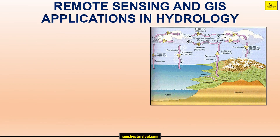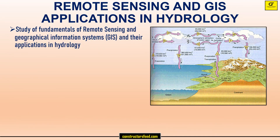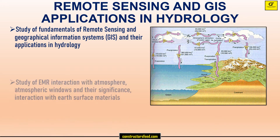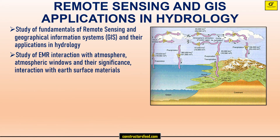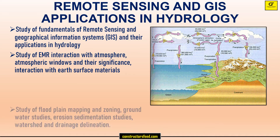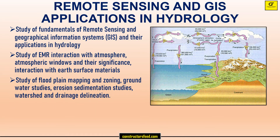Remote sensing and GIS applications in hydrology: study of fundamentals of remote sensing and geographical information systems and their applications in hydrology. Study of EMR interaction with atmosphere, atmospheric windows and their significance, interaction with earth surface materials. Study of floodplain mapping and zoning, groundwater studies, erosion and sedimentation studies, watershed and drainage delineation.